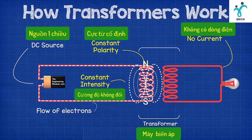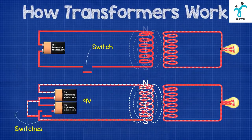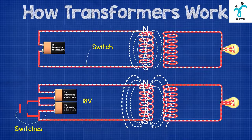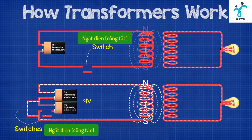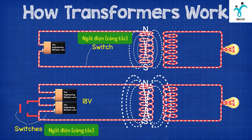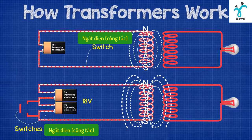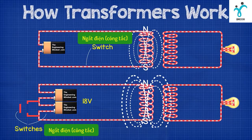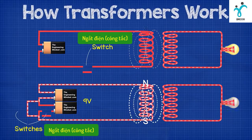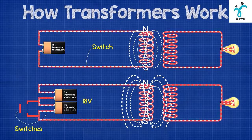Electromotive force does not occur when we pass DC current through the primary coil because the magnetic field is constant, so the electrons are not being forced to move. The only time it will cause EMF is very briefly when the primary circuit is opened and closed, or when the voltage is increased or decreased, because these actions result in a change to the magnetic field. Therefore we use alternating current, as this change occurs constantly.